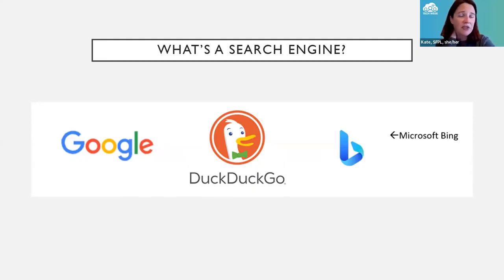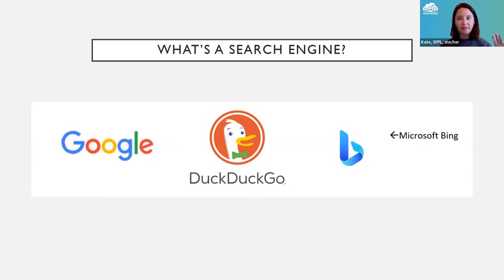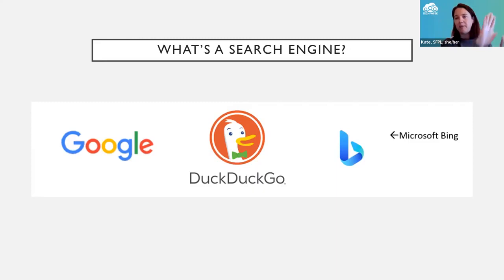How a search engine works in broad strokes: it's not psychic, and it's not a definitive answer on anything. What these companies do is they send little software robots — sometimes known as spiders — and they look at all the websites that everyone has posted on the internet. They collect information about what keywords are on those websites and what information is on them. They're essentially creating an index to the internet.